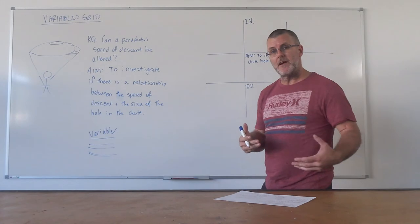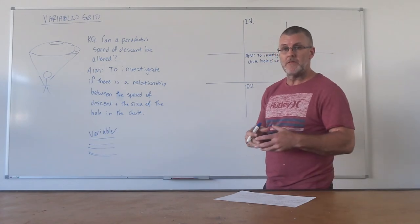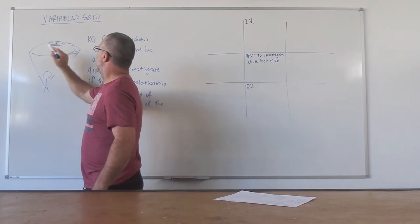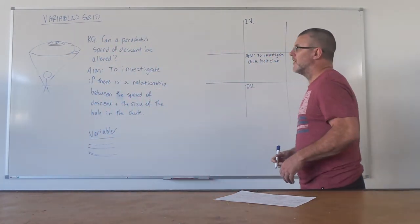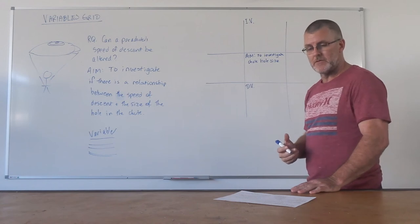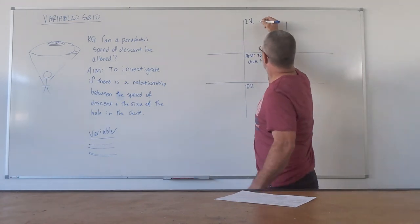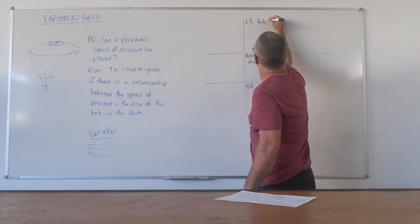Now, I wouldn't accept that from a student, I'd actually expect them to write the whole aim in there, but for the purpose of this video, I'm just going to write an abbreviation of the aim. The independent variable, in this case here, the independent variable is the size of the hole. Does that hole size, the diameter of that hole or the square centimeter area of that hole, does that make a difference in terms of its rate of descent? So up here, my independent variable is going to be the hole size.